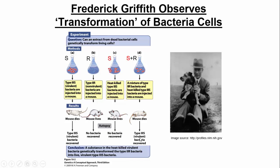How did he recover 3S deadly bacteria? He didn't put live 3S in there, but he got them. What he proposed was that transformation happened. The 2R bacteria were alive, and he heat-killed the 3S, but whatever the genetic material was, he didn't kill that — he didn't denature it. Although the bacteria were dead, their genetic material was passed from them to the non-deadly 2R bacteria, and in essence turned them deadly. Now they had the genetic instructions to make themselves deadly. He called this transformation — the passing of DNA from the 3S to the 2R.